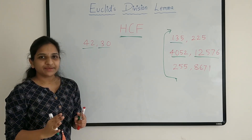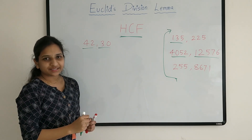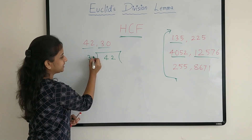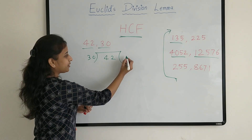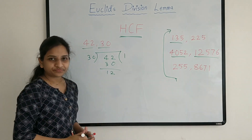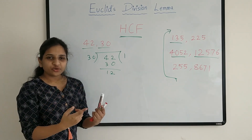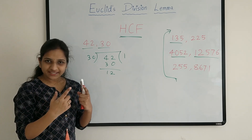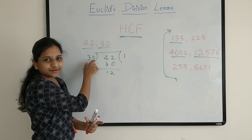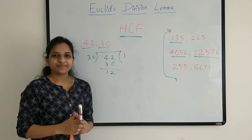The first step is we should divide the big number by the small number. So I am dividing 42 by 30. My quotient is 1 and remainder is 12. As the remainder is not 0, we should go for the next division. In the next division, we have to divide the divisor by the remainder, and the process continues till we get remainder as 0.